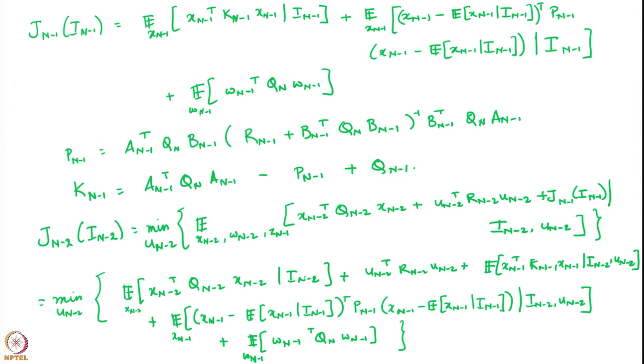This becomes our final expression for this step. This expression will require some further analysis because it is not as simple as the one we saw for the perfect information case, and we will need to think carefully about how it can be simplified and extended to further time steps. We will do that in the next lecture.